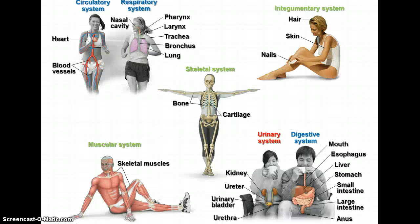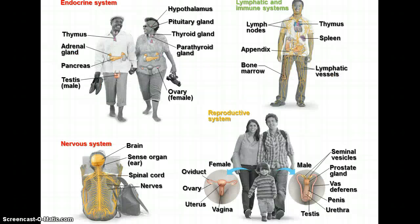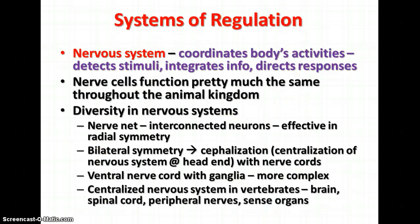Here are diagrams of the different systems we're going to talk about. You also have a page in your packet with descriptions of body systems and the organs contained in each. The first system of regulation we'll discuss is the nervous system. The nervous system coordinates the body's activities — it detects stimuli, integrates information, and directs responses. Nerve cells function pretty much the same way throughout the animal kingdom; we'll talk about how nerve stimuli are transmitted when we do the worksheets.